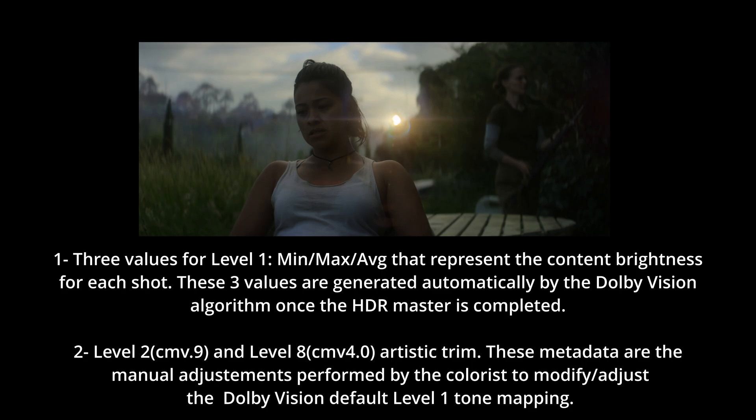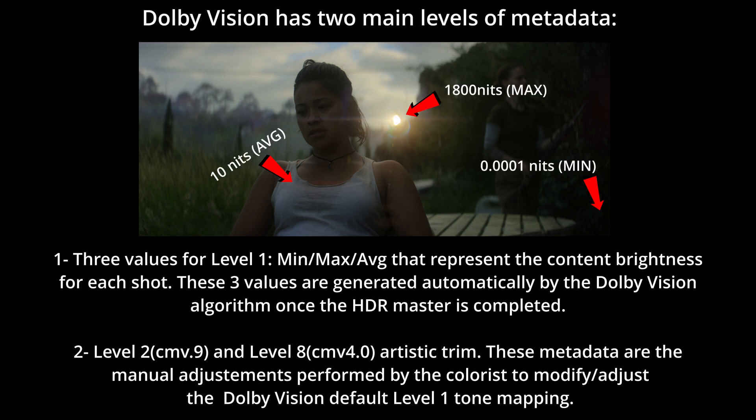First, let me give a brief explanation of how Dolby Vision works. At its core, Dolby Vision includes metadata that helps optimize HDR playback on a scene-by-scene basis. For Level 1 Metadata, three key values are generated for each shot: minimum, maximum, and average brightness. These values represent the luminance characteristics of the content and are used to guide tone mapping on compatible displays. Once the HDR master is completed, these values are calculated automatically by the Dolby Vision algorithm.